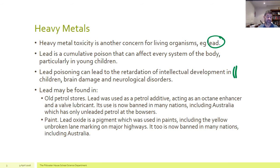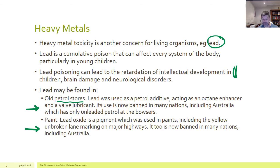The problem is that lead was used in such a widespread way that there is still a lot of lead in the environment. Leaded petrol was very popular — it was used as a fuel enhancer, allowing octane to burn more efficiently, and also as a valve lubricant. We now know the use of lead is a big problem, and so Australia has banned the use of leaded petrol. Now you only find unleaded petrol, or better qualities of unleaded petrol — lead is no longer used in petrol.